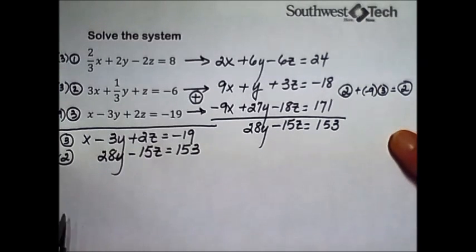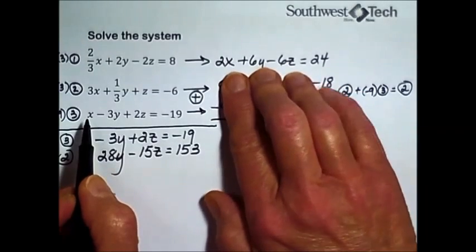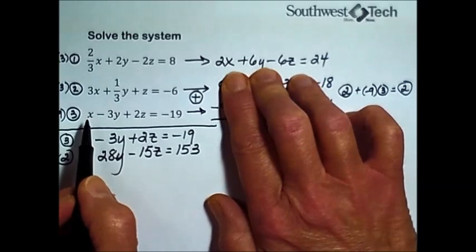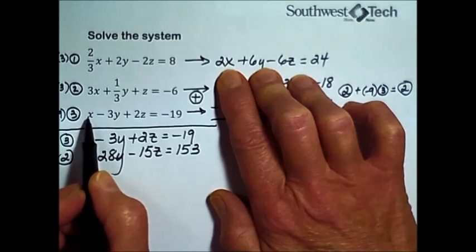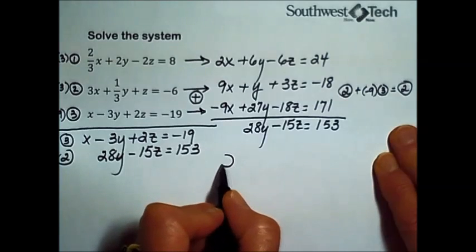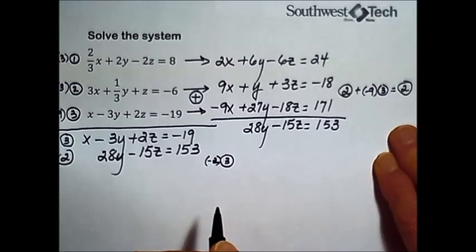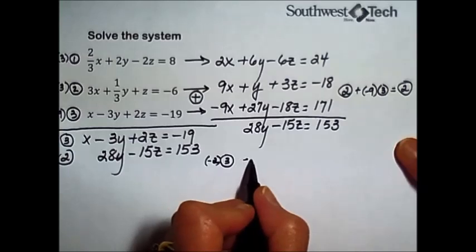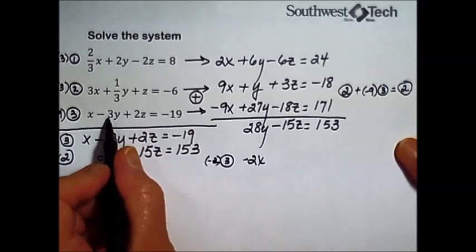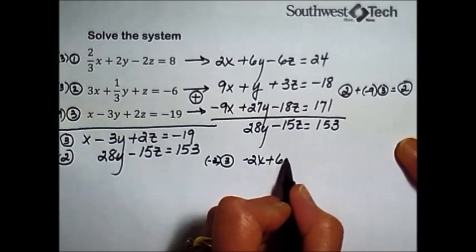And then I'm going to return to equation number three, add it to our newest version of equation number one so that the x term cancels out on that sum. So I need to have a negative 2 on the x term. So I'm going to take equation number three, multiply every term by negative 2. So negative 2 times x is giving us negative 2x. Negative 2 times the negative 3y is going to give us a positive 6y.